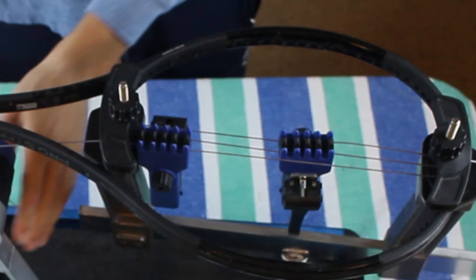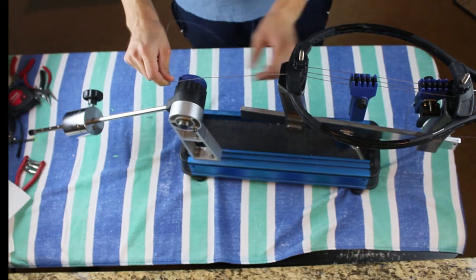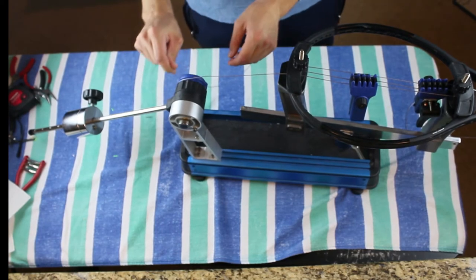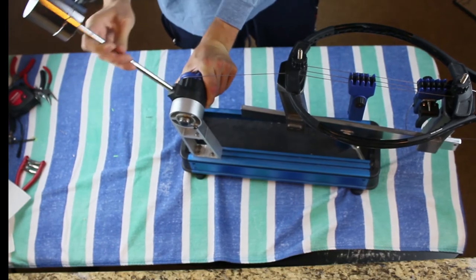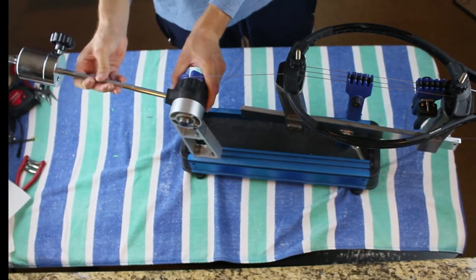So once you have that string tensioned correctly, go ahead and clamp that down. Now we can go ahead to the other side and tension that one correctly. So we will have the tension correctly on each side.